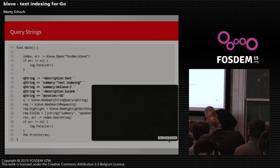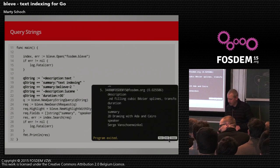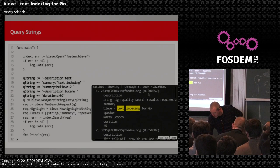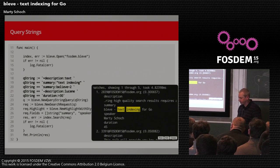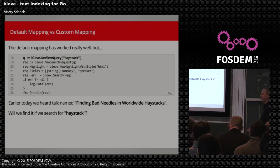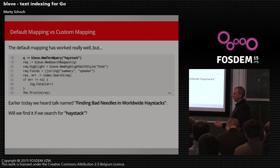Running the query string example matches five talks, with Bleve having the highest score. I mentioned the mapping at the beginning and how important it is. As you can see, we've gotten pretty far with just the default mapping. But it's not perfect, and I wanted to highlight that — this is a very important topic for successfully using Bleve.